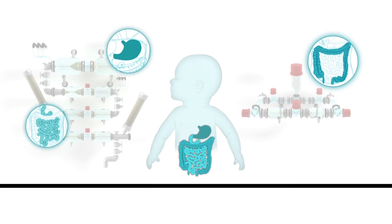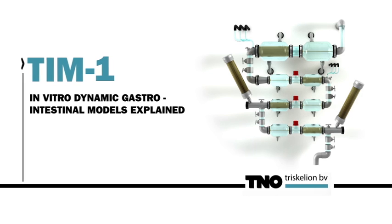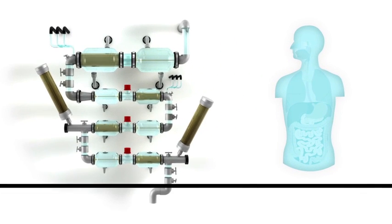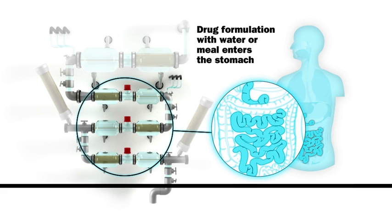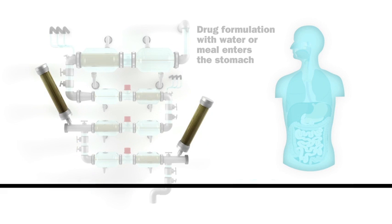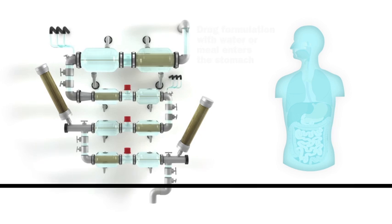Let's take a closer look at the TIM systems. TIM 1. Here we see the stomach and the small intestine divided into three parts. Left and right of the small intestine we see the dialysis or filtrate systems removing compounds to mimic the real life situation.